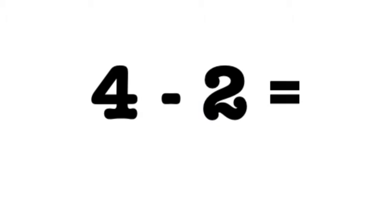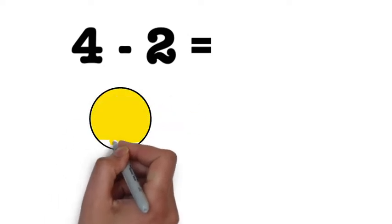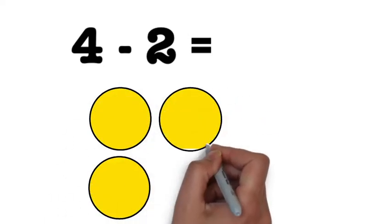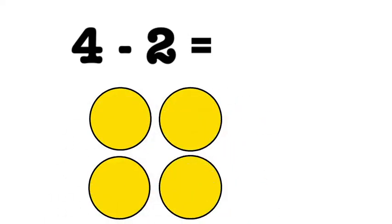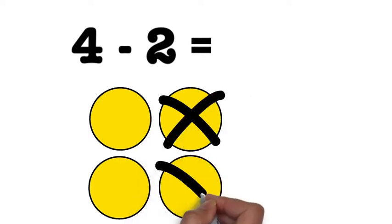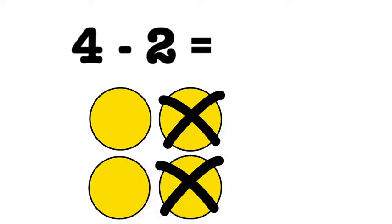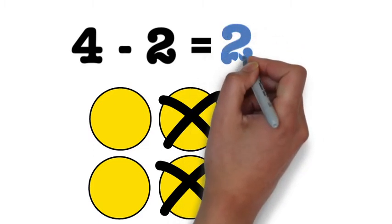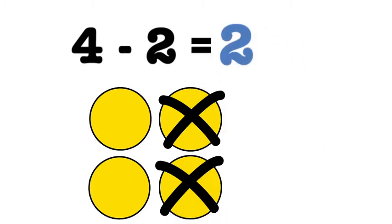Let's look at the example 4 minus 2. Notice that both numbers are positive. To set this problem up with the two-color counters, we start with four positive or yellow counters. The problem is asking us to remove two positives from the four, which is possible since they are both positive. If we remove two positive yellow counters, we are left with two positive counters, which means our answer is positive 2.